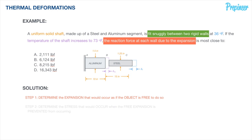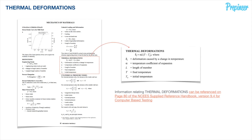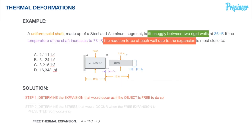We remove one of the constraints, then hop back to page 80 of the handbook where our thermal deformation formula is. This is our general formula for free expansion. We pull that back to our problem statement and define the variables for each segment — both the aluminum and the steel. The aluminum length is originally 10 inches; the steel length is originally 15 inches. The aluminum segment diameter is 1.5 inches; the steel segment diameter is 1.25 inches.